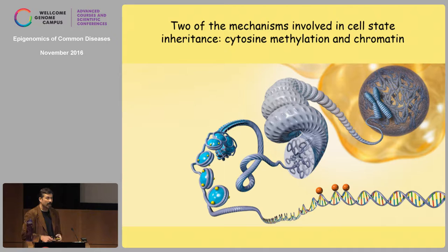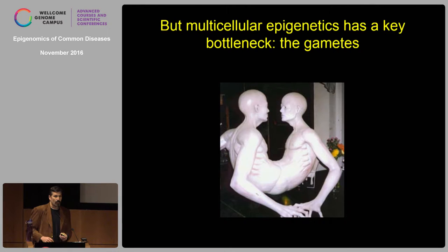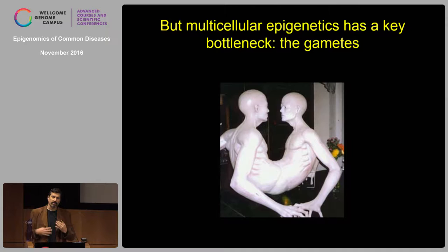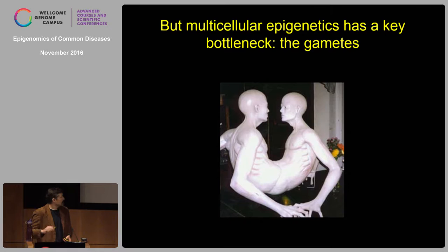Cell state inheritance is mitotic epigenetic inheritance. When we reproduce, we go through the choke point of the gametes. For any information to be transmitted transgenerationally requires that it survive all the massive packaging and informational changes that occur during gametogenesis. Then that information, at the moment of fertilization, has to unroll over the course of development to give you a coherent phenotype. This is a much different beast than cell state inheritance.